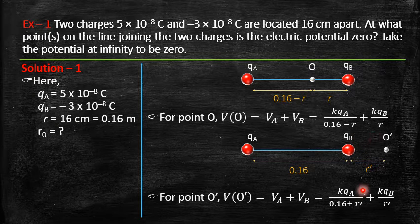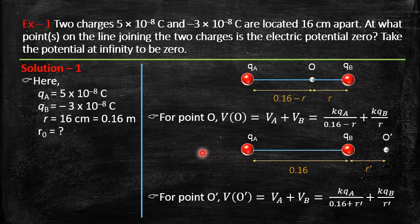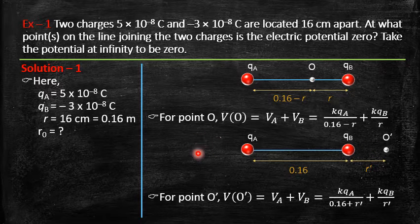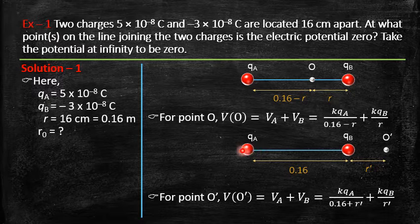So we will have two answers: r and r′, both distances measured with respect to charge B. We should also consider whether a point on the left side of A can give zero potential — on that side, potential due to A is positive and due to B is negative. I leave this as an open question: can we find any point on the left side of A where the two potentials cancel?